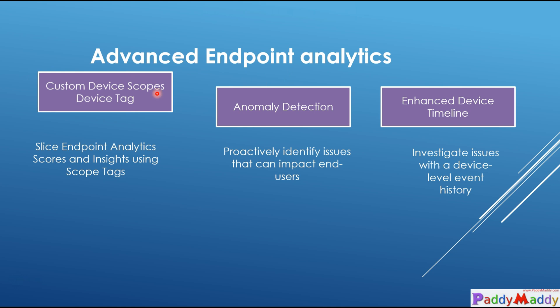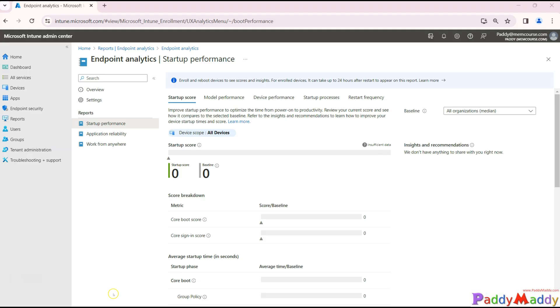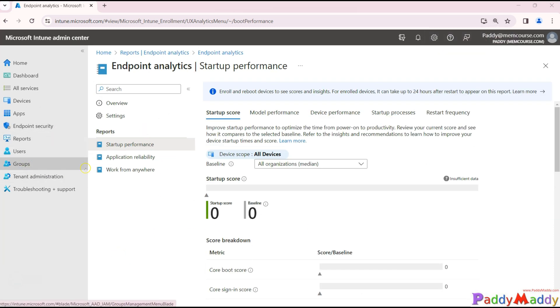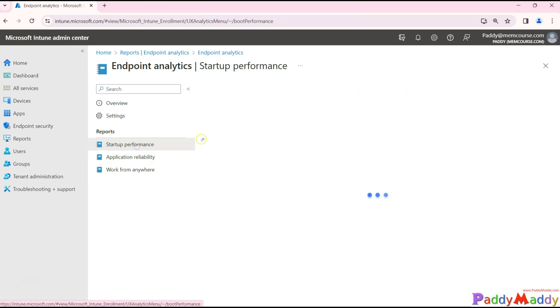The first feature is custom device scoping. With this feature you have something called device tagging. What happens with device tagging is you can slice your endpoint analytics scoring and insights using a device tag. For example, you might have a business unit called Contoso — that entire business unit can have a device tag. Let me show you where you can add this — if you go to Reports, then Endpoint Analytics, and click on Startup Performance, you'll see Device Scoping.